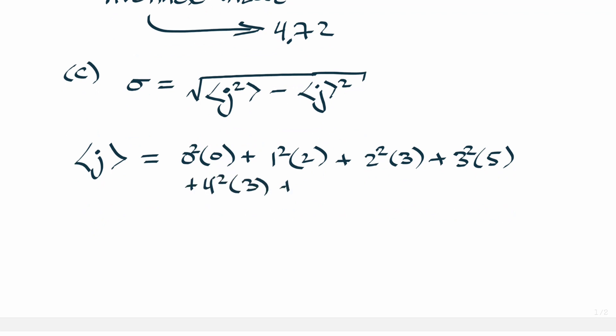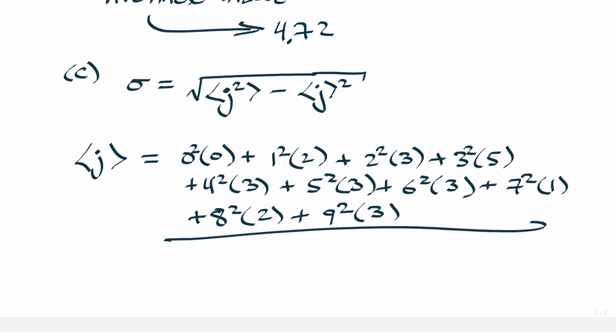Same thing with five squared and six squared, also three times each, plus seven squared which occurred only one time, plus eight squared which occurred two times, plus nine squared which occurred three times. And you're going to divide that by 25 because there were a total of 25 digits.